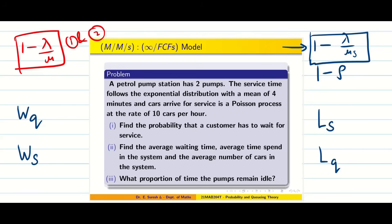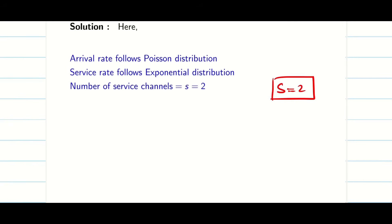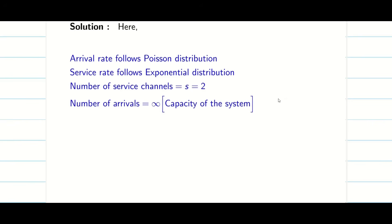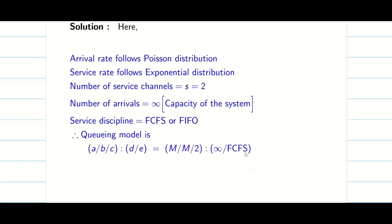You have to write all the information properly in examinations: arrival rate follows Poisson, service rate follows exponential, number of servers s = 2. The number of arrivals is infinite — that is the capacity of the system — and the discipline is FIFO. So the queuing model is M/M/2/∞/FIFO.